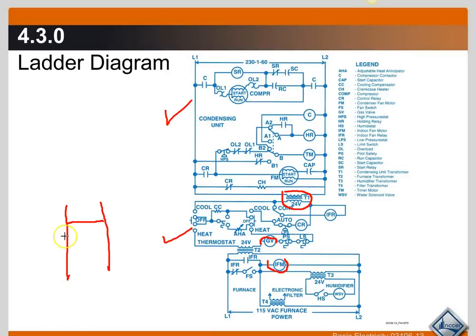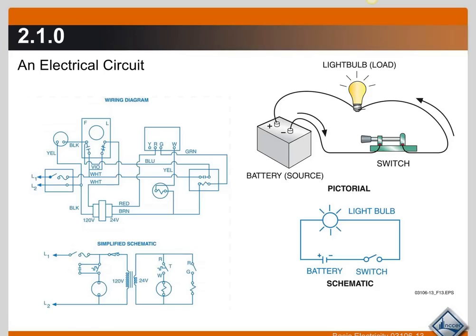You'll have your thermostat, your indoor fan motor relay, contactors, your gas valve and so forth on those rungs of the ladder. So that's your ladder diagram, it breaks it down into each individual circuit as best it possibly can.